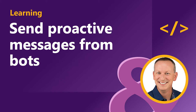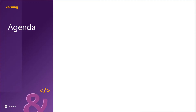Proactive messages are sent by a bot to start a conversation. Welcome messages, poll react responses, and external event notifications are common scenarios when you'd want to use proactive messages. In this section we're going to learn how to send proactive messages from your bot.